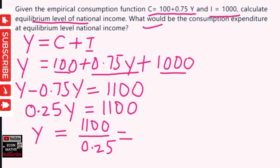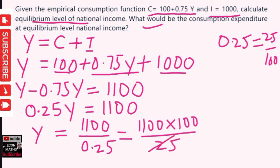Now, this 0.25Y can be written as 25Y / 100. So this will become 1100 × 100 / 25. 25 fours are 100, so we get 4 × 1100 = 4400.